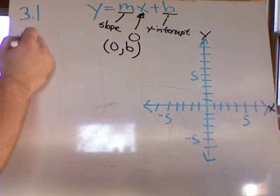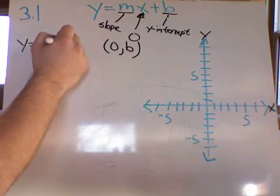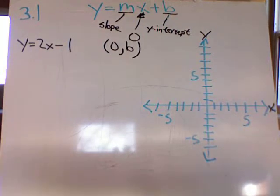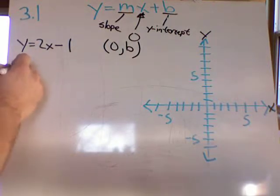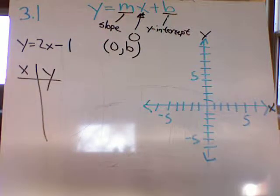So let's say we have an equation, y equals 2x minus 1. Now what I want to do is I want to graph this. One way I can do that is I can create a table. In that table, I have x and y data points.